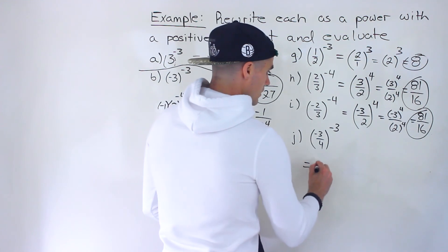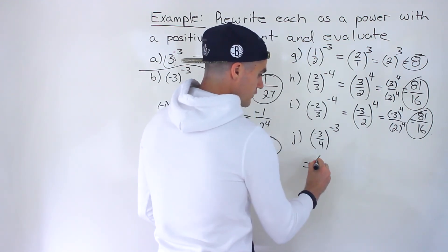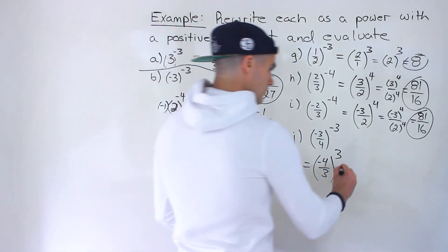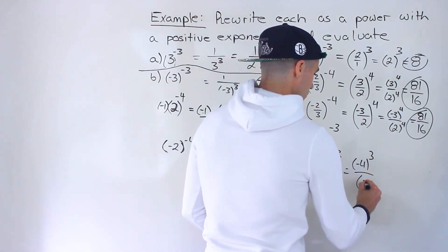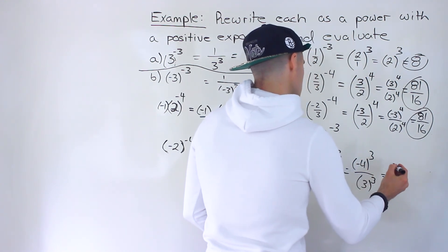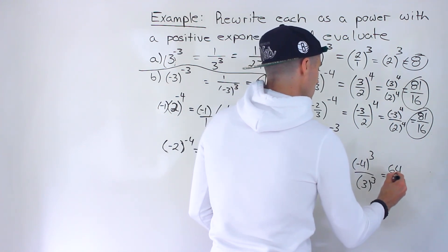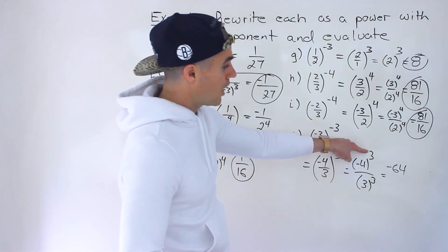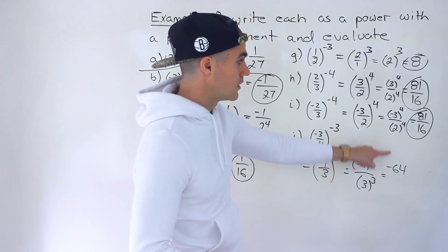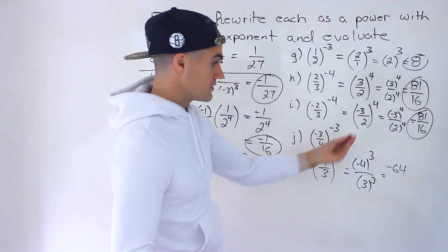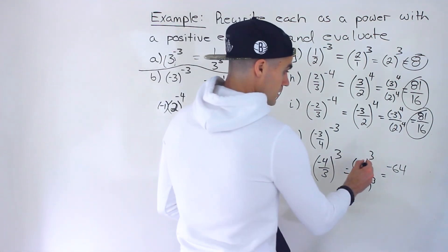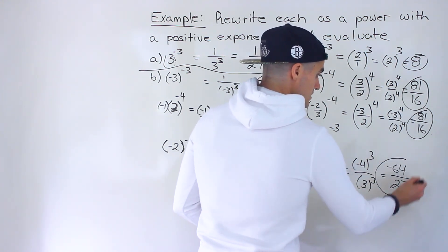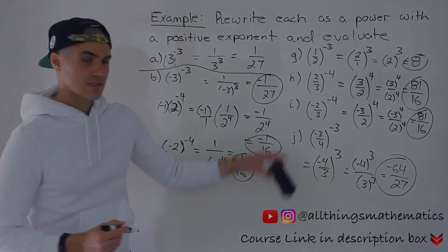For part j, we flip the fraction to get 4 over negative 3, bring the negative to the top giving negative 4 over 3, change to a positive exponent, then evaluate: negative 4 to the power of 3 gives negative 64 — a negative value to an odd exponent gives a negative result — and 3 to the power of 3 gives 27. So the answer for part j is negative 64 over 27.